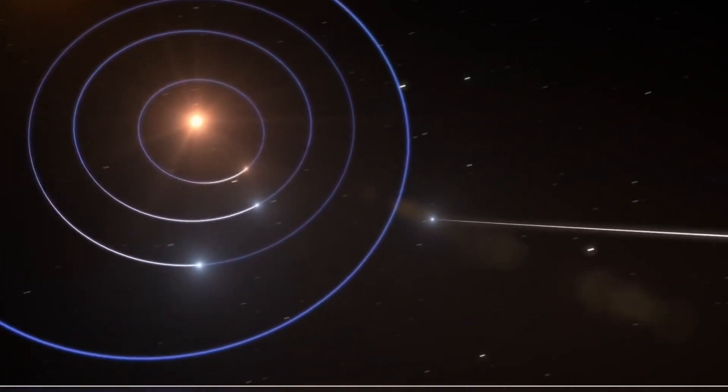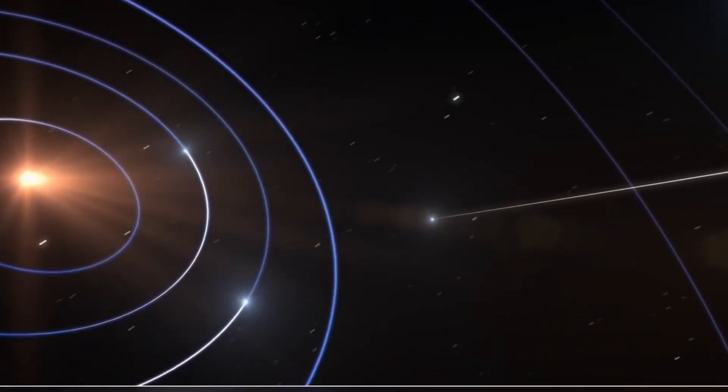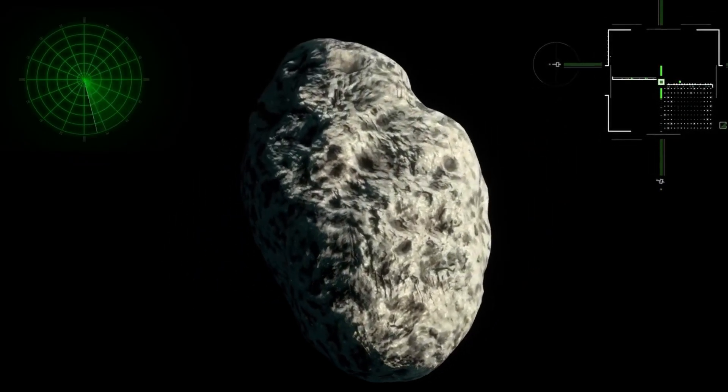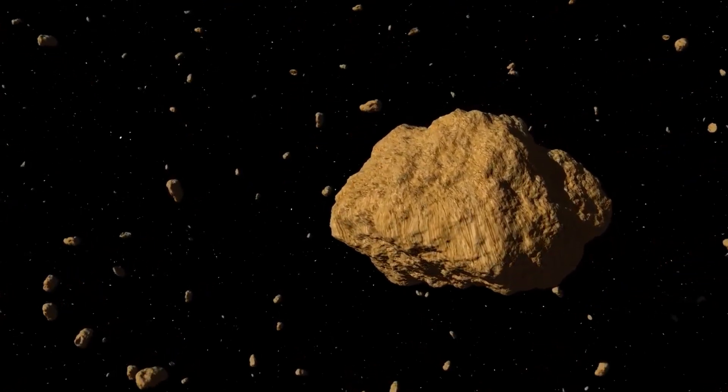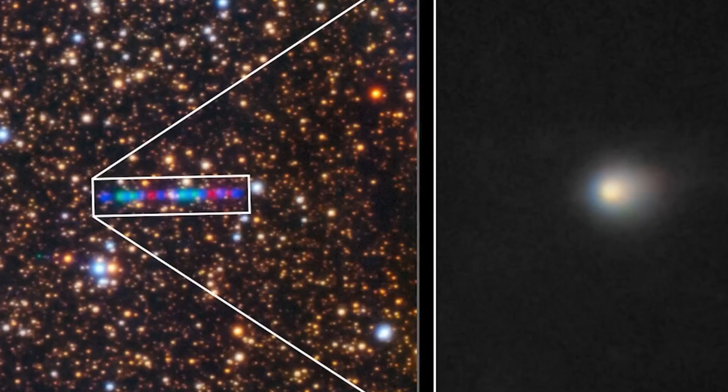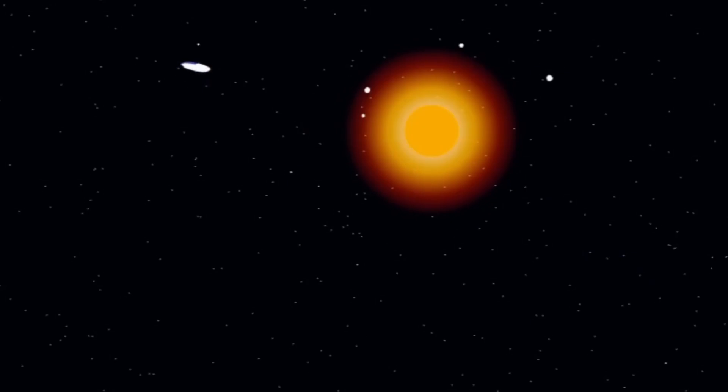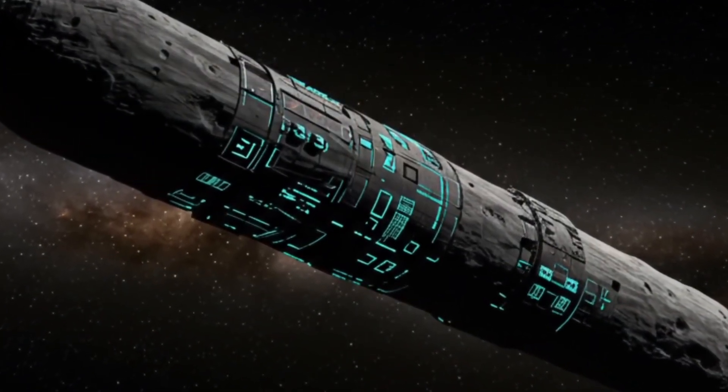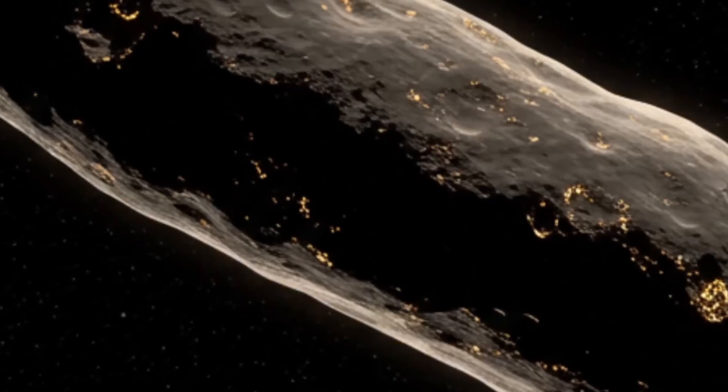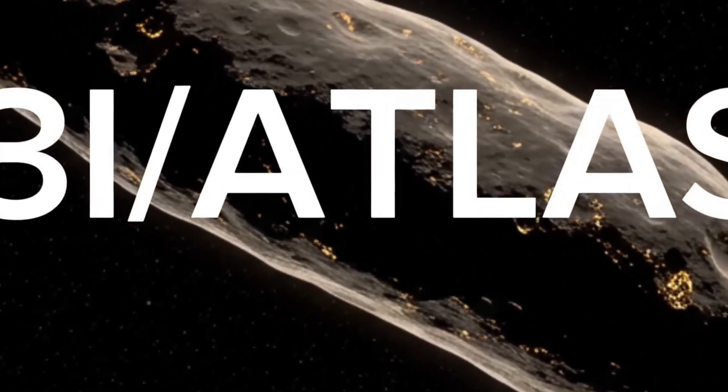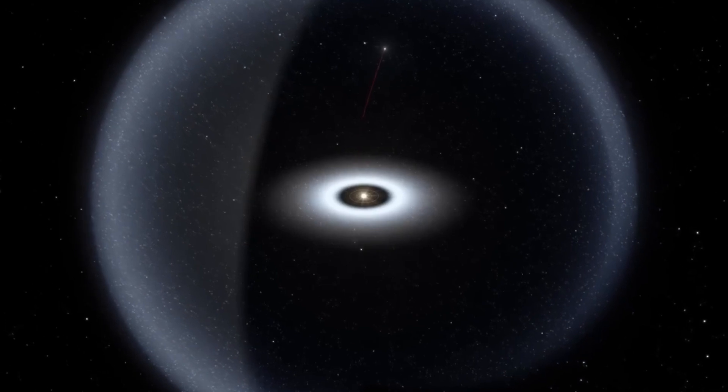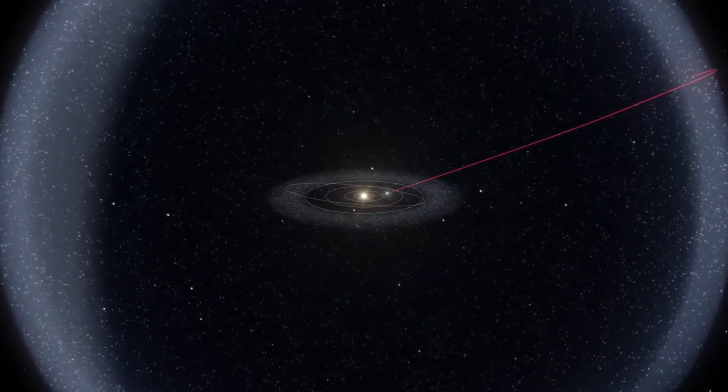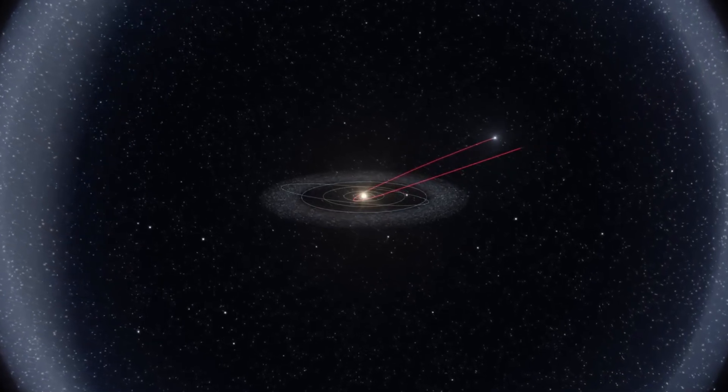After Oumuamua in 2017, the object Borisov entered our solar system in 2019. Borisov was later classified as a simple interstellar comet that came to us either from the Oort cloud or from the depths of space. Unlike Oumuamua and 3E Atlas, this object exhibited the typical comet-like evaporation of ice and gas and was therefore quite easy to explain. Only Oumuamua and now 3E Atlas continue to puzzle our researchers.